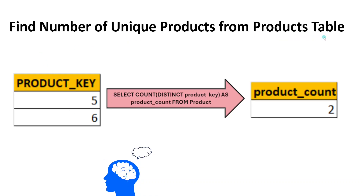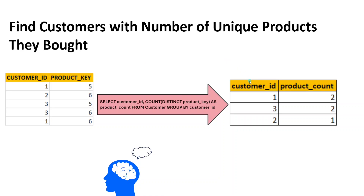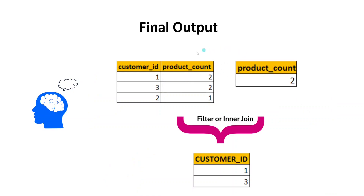Let me break down this problem into smaller steps. First, I need to find the number of unique products from the product table — I'm simply using count of distinct product key from the product table, which gives two as the product count. Next, I'm going to find the customer IDs along with their unique number of products purchased using an aggregate function: customer ID with count of distinct product key from the customer table, grouped by customer ID. This gives customer ID one with two unique products, customer ID three with two unique products, and customer two with only one unique product.